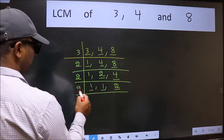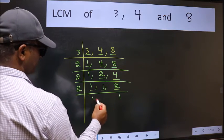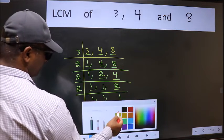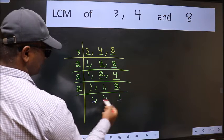2 is a prime number. So 2 1s 2. So we got 1 in all the 3 places.